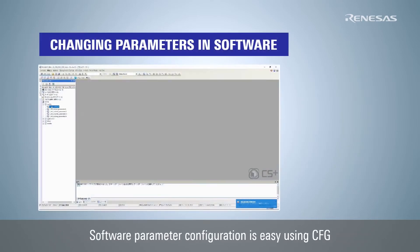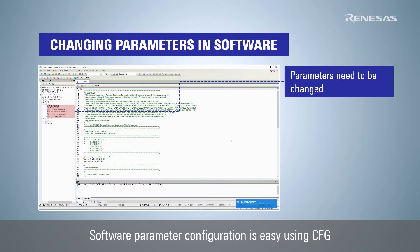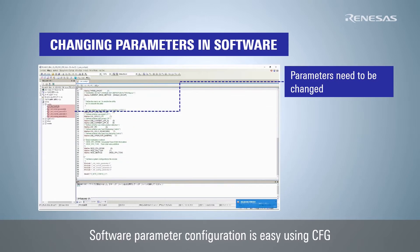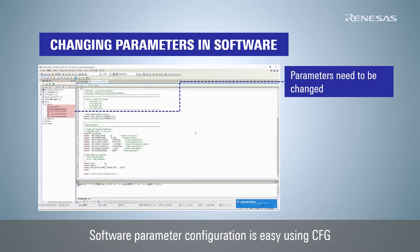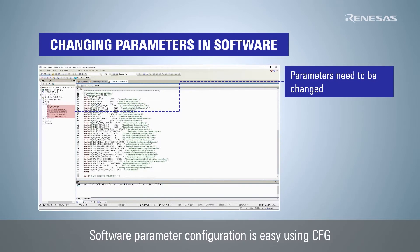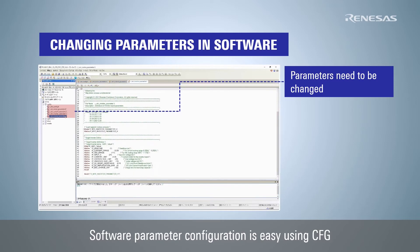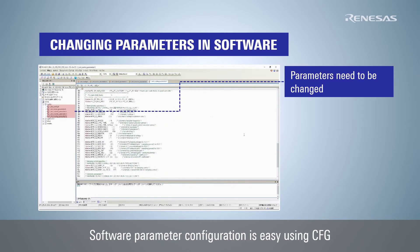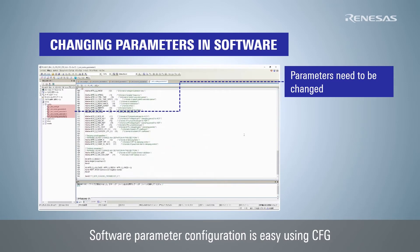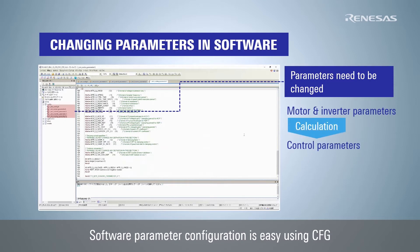The parameters in the five header files in the config folder of the sample software need to be changed in order to switch to another motor and an inverter board with three-shunt resistor current detection method. This requires calculating the control parameters based on the characteristics of the motor and inverter board, as well as designing the Q format number and scaling to the PU system for use in control operations.